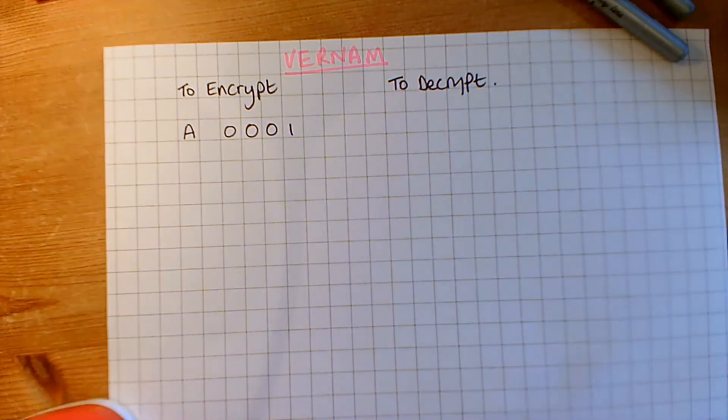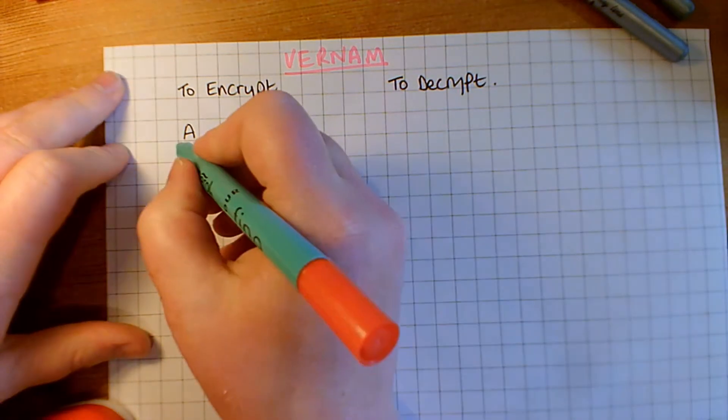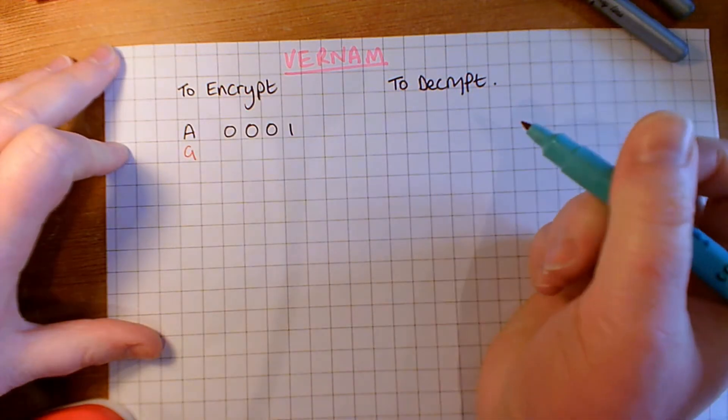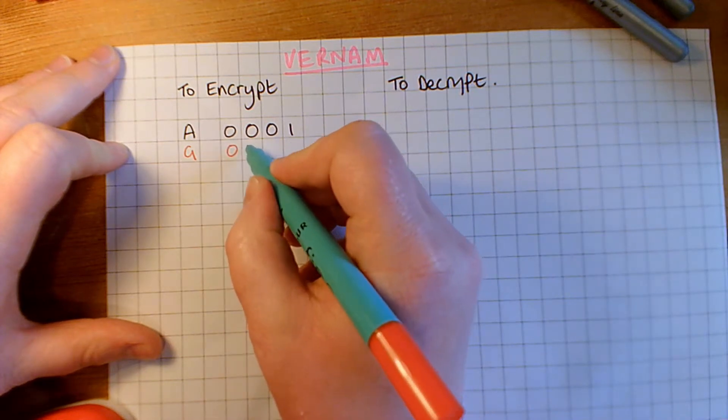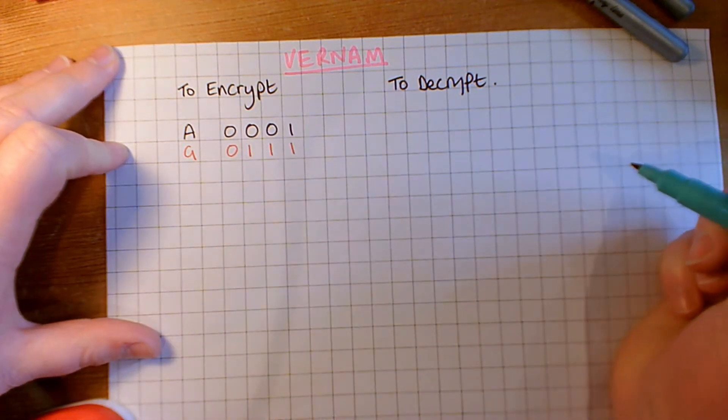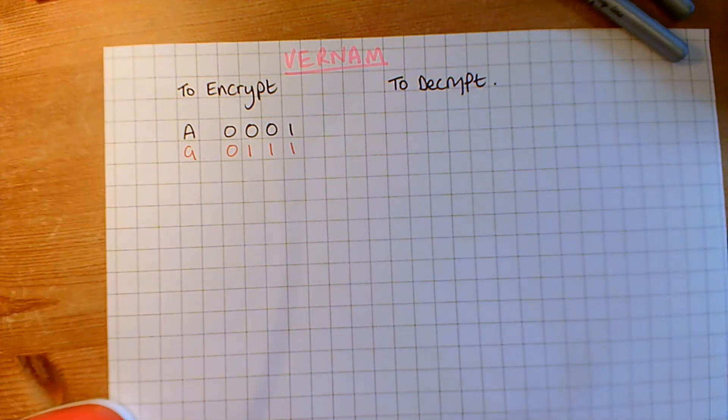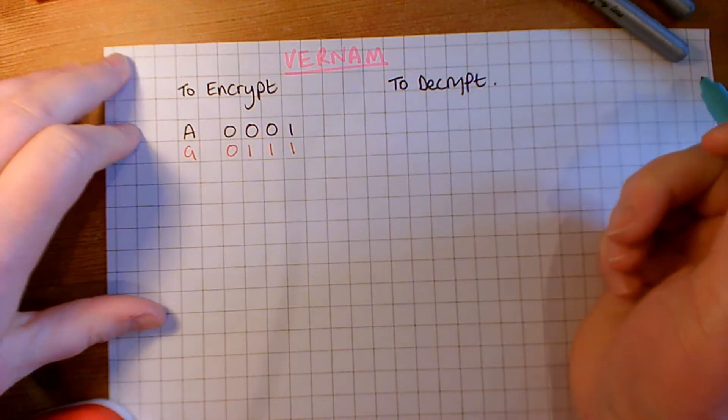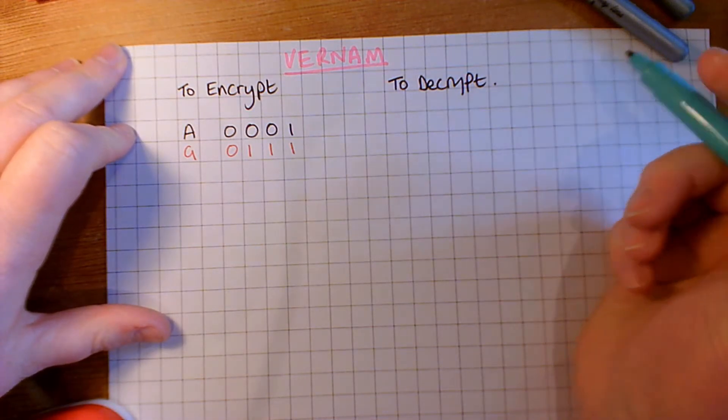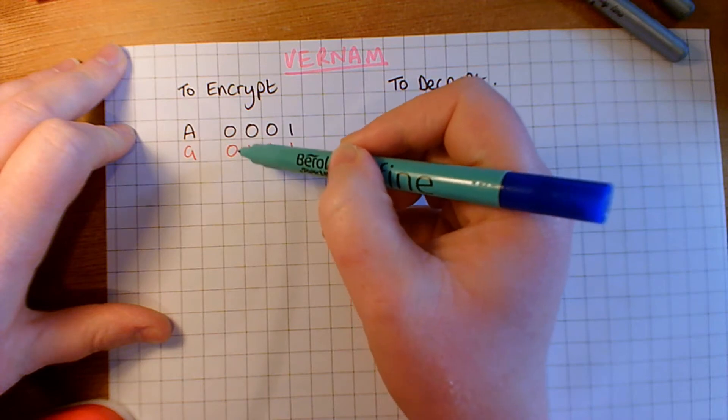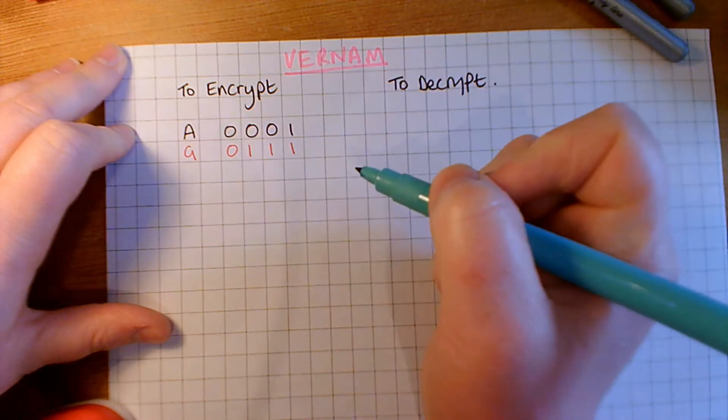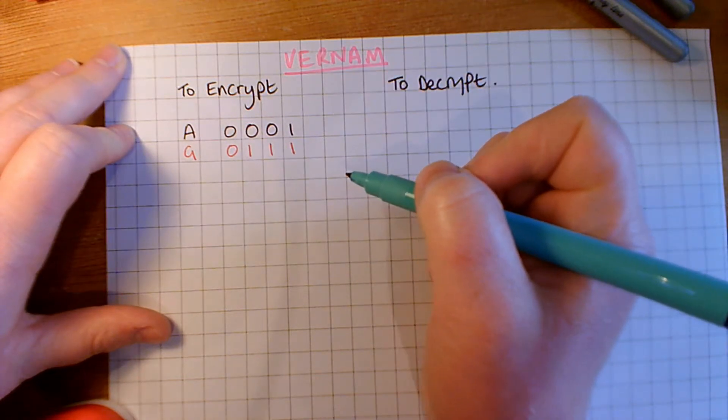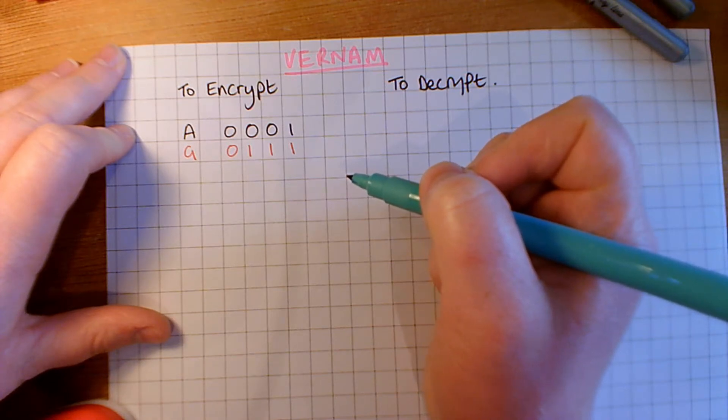So, what we need now is our key. Now, remember with the Vernam cipher, the key would be random. I'm just going to use the letter G, and we'll need our binary data for the letter G. And what we're going to do with these is we need to apply an XOR gate onto these, so each pair of binary bits are going to be XORed. So, remember that's exclusive OR, so it can only be one of them being a one. If they're both a one, then it would give us the value of zero.